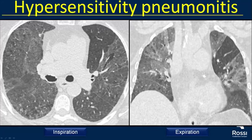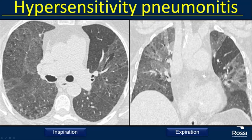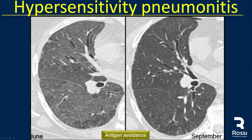Another case involved exposure to dove feathers with diffuse ground glass opacities and areas of low attenuation pattern. The expiratory CT showed a triangular area of air trapping with diminished vascularity in a patient with ground glass opacities. After the antigen was removed, follow-up CT in June showed resolution of those ground glass opacities in this patient with hypersensitivity pneumonitis.